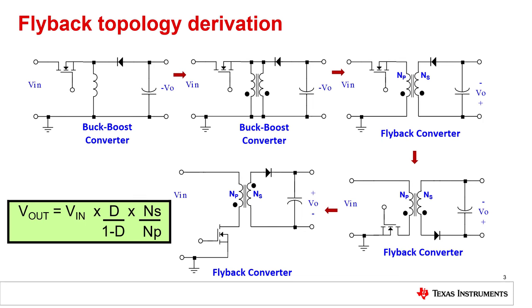Let's start the fundamentals of flyback converters by deriving it from the basic topology of an inverting buck-boost converter. As discussed in the first video, the basic inverting buck-boost converter consists of three components: switch, inductor and diode. The absolute value of the output can be higher, equal or lower than the input voltage, but it is negative compared to the input.